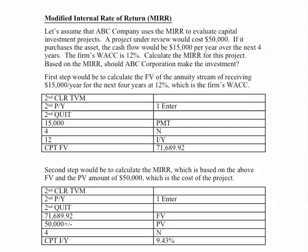This is the example I want to quickly go through. I'm assuming this particular company has a project under review that's going to cost $50,000. It's going to generate $15,000 per year over the next four years. The firm has a weighted average cost of capital of 12% — we're in a 12% risk category. And you can see the way we're going to set this up.